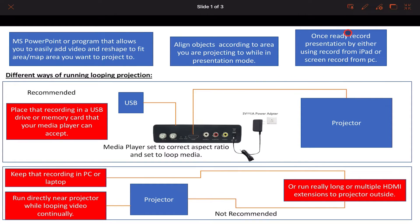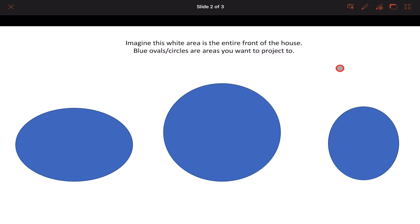Now I want to focus on how to record your final presentation that you want to use, whether from an iPad Pro — which is what I'm currently using — or from your PC or even your phone. When you're using PowerPoint you can go outside and have your device directly connected to the projector. Imagine the white area being the entire area your projector can reach — in my Halloween setup example, I focus on these blue ovals or circles I want to project to.